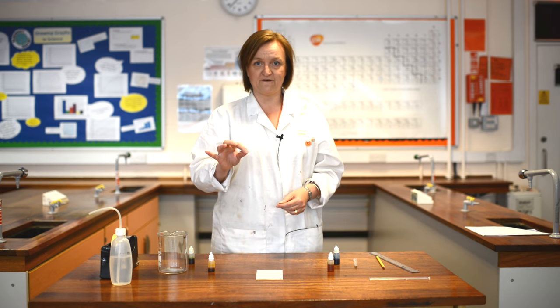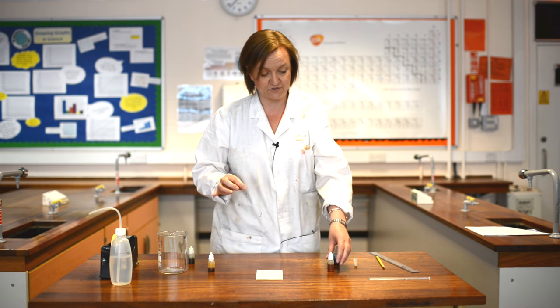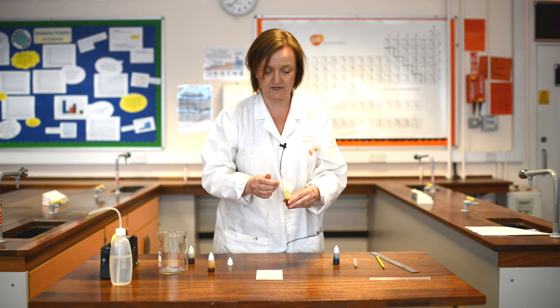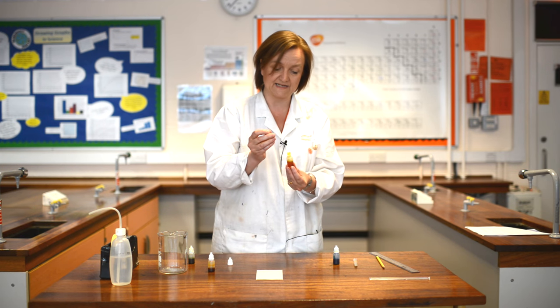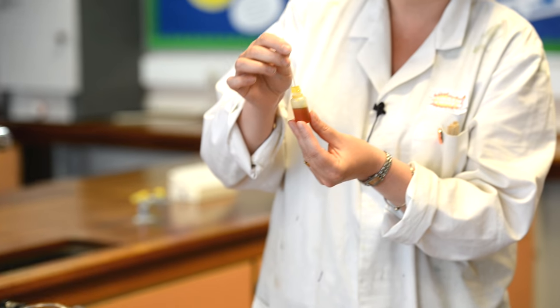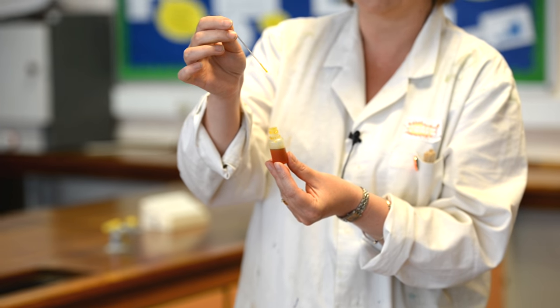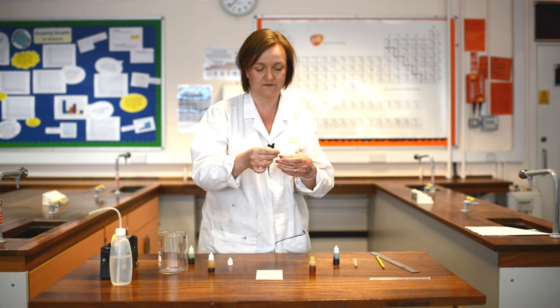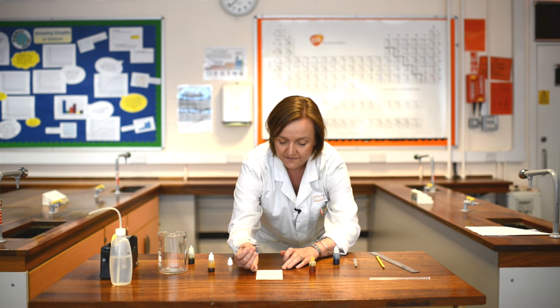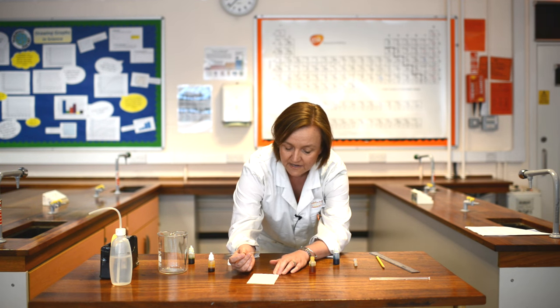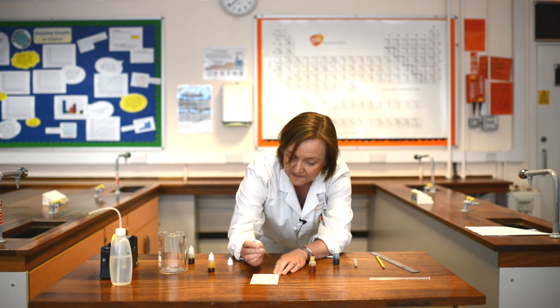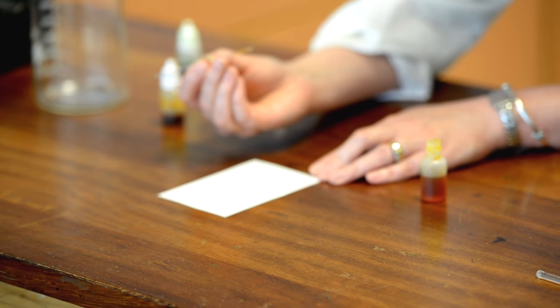I'm going to take a very fine glass tube called a capillary tube, and when I place this into the coloring it will automatically, just because of something called capillary action, suck a little bit of the liquid straight into the tube. So we don't need to use any kind of suction. To place it onto our cross, we just touch it very lightly and let it spread out on the paper.